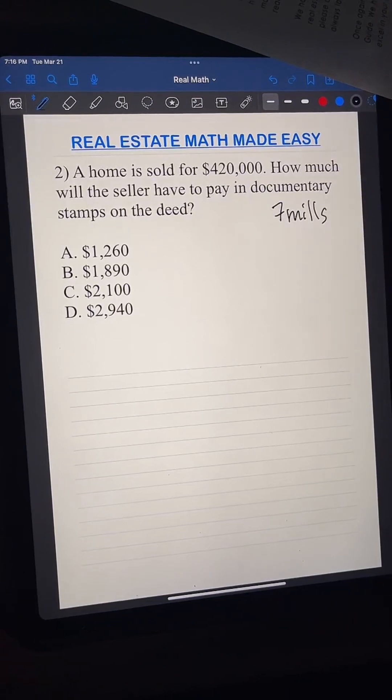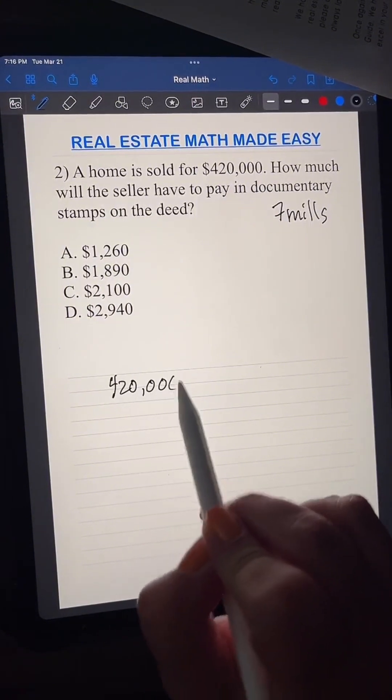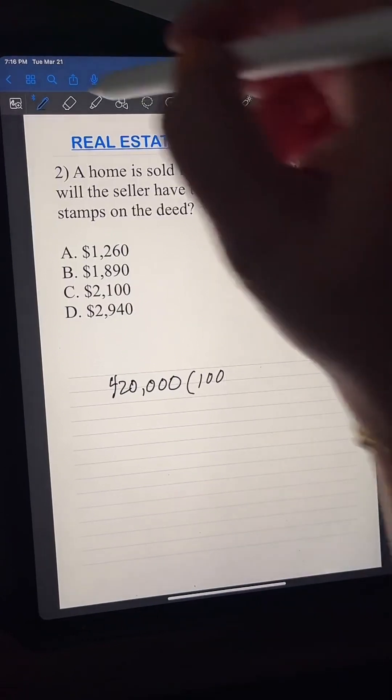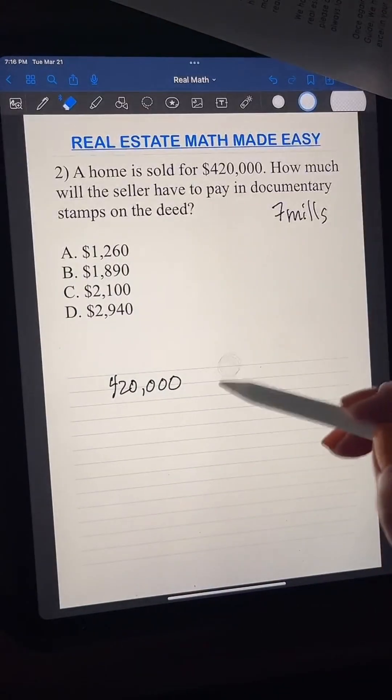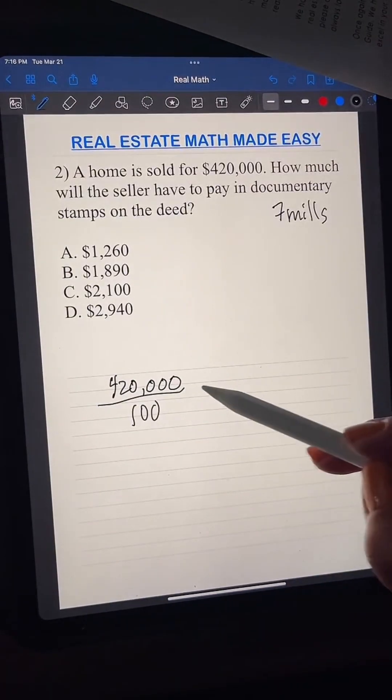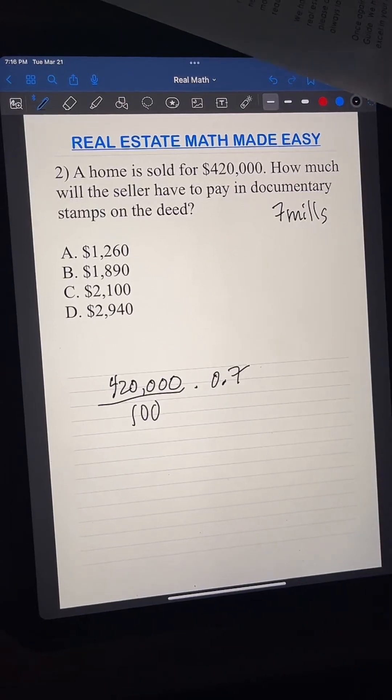Okay? So here, what you would do is say, $420,000 times 100. I'm sorry, divided by 100. I don't know what's wrong with me today. Divided by 100, okay? Then times the 7 mils, the 7 mils that you have there.